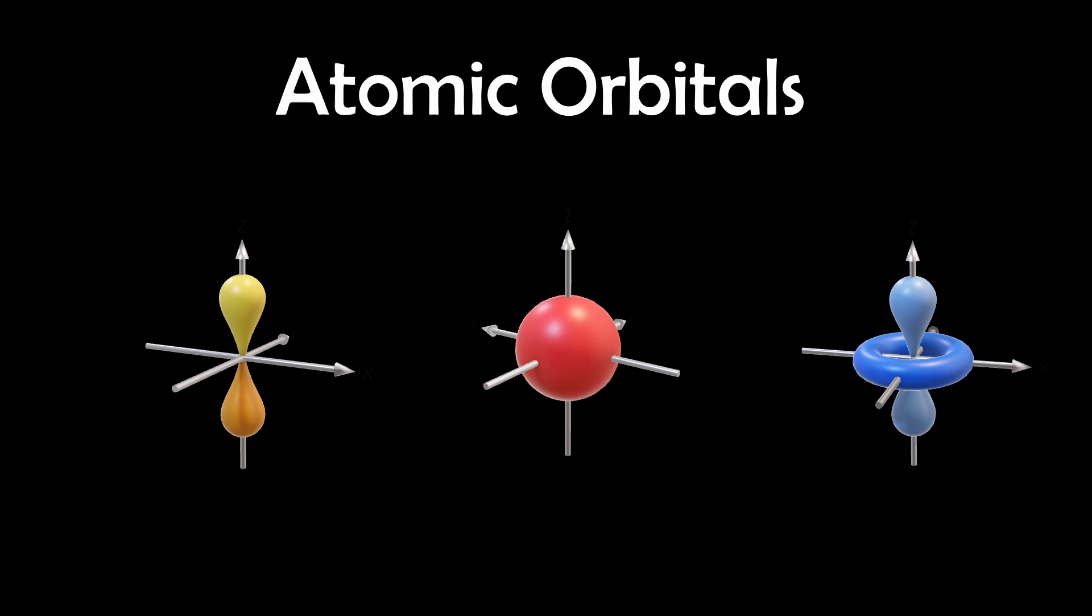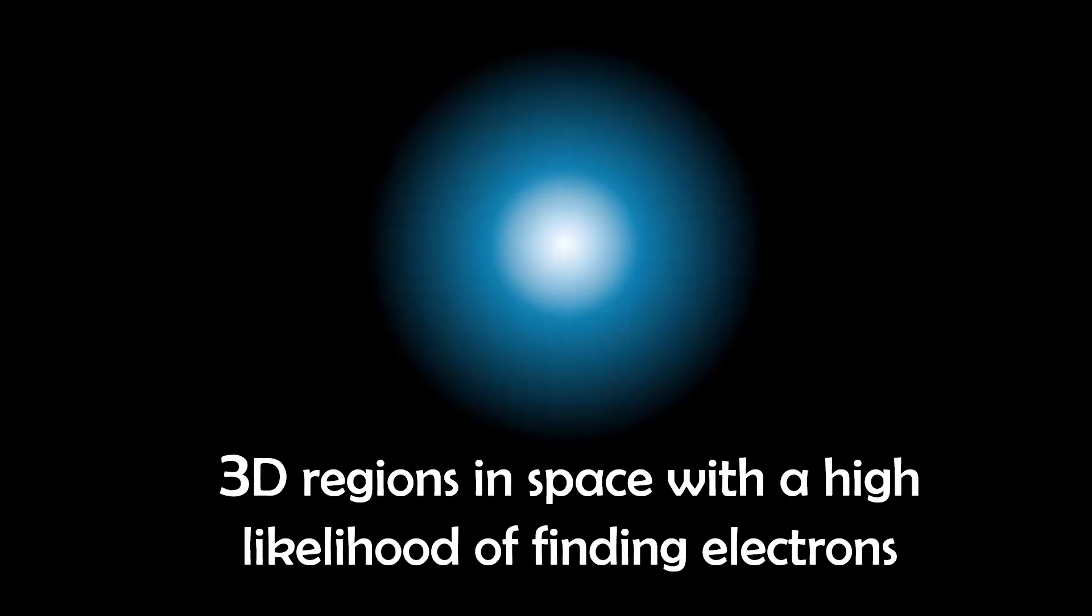In our previous video, we looked at atomic orbitals and their quantum numbers, exploring how orbitals represent 3D regions in space with a high likelihood of finding electrons.